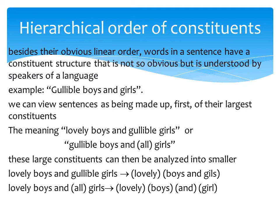Number two, hierarchical order of constituents: whereas the linear order of words in a sentence is obvious, the constituent structure is not always obvious but is understood by speakers of the language. For example, 'horrible boy and dog' can be understood as being made up first of their largest constituent — 'lovely boy and beautiful girl' — and then analyzed into smaller units, such as 'lovely boy and girl.'